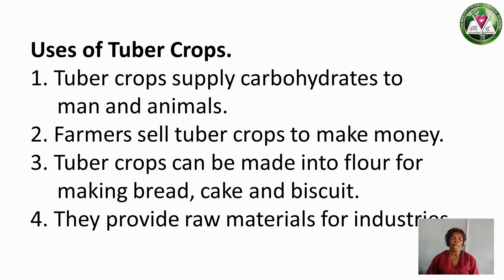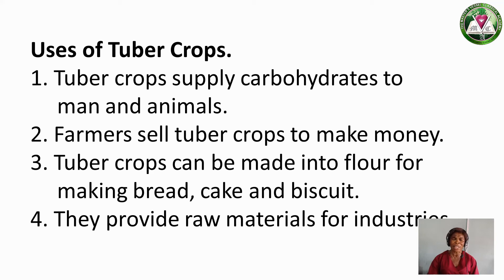Number 4: tuber crops provide raw materials for industries. Many industries use them to produce so many things. When these tuber crops are processed into flour, industries buy the flour and use it to produce bread, cake, and biscuits.